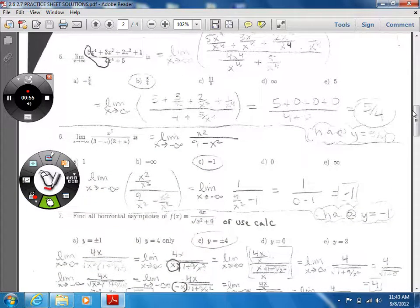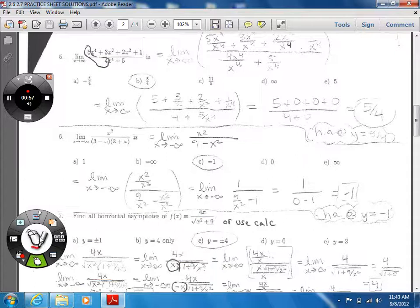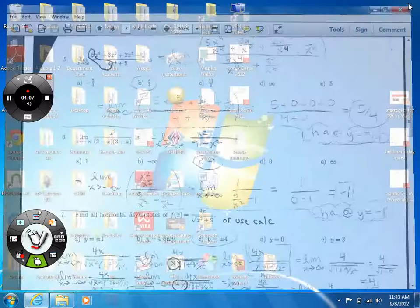Number five, you can do that one with the shortcut, and get five over four, because we have the highest power of x, x to the fourth over x to the fourth there. Or you can divide by x to the fourth, everything.